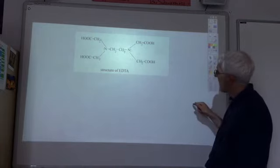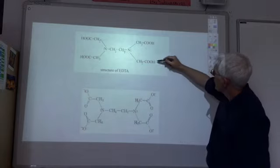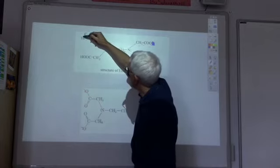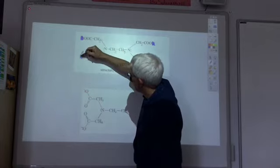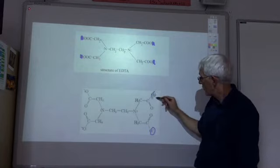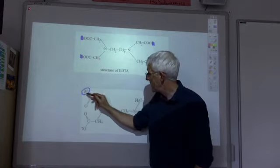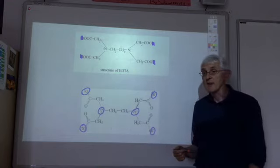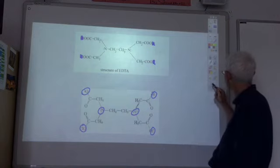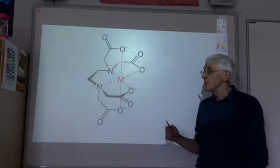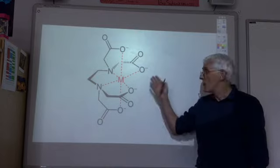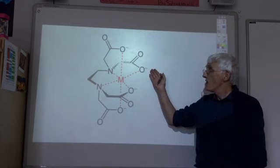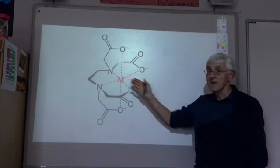So under alkaline conditions we lose the four hydrogens which are attached to the carboxyl groups leaving one, two, three, four, five, six lone pairs which can bond with a transition metal. So the nickel EDTA complex is octahedral in shape and importantly the mole ratio is one molecule of EDTA to one nickel ion.